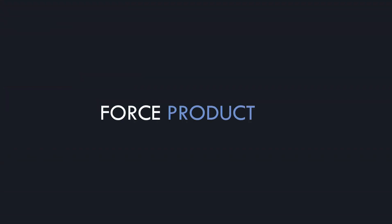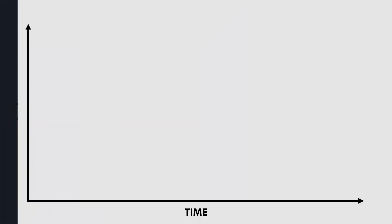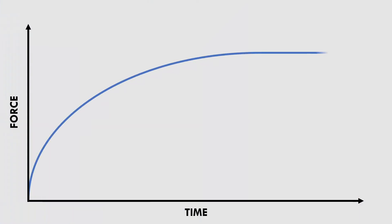To understand what rate of force development is, we need to have a look at how force is produced over time. As we can see on this graph, athletes cannot produce maximal force immediately. Maximal forces aren't usually reached until around 2-3 seconds into an exercise.